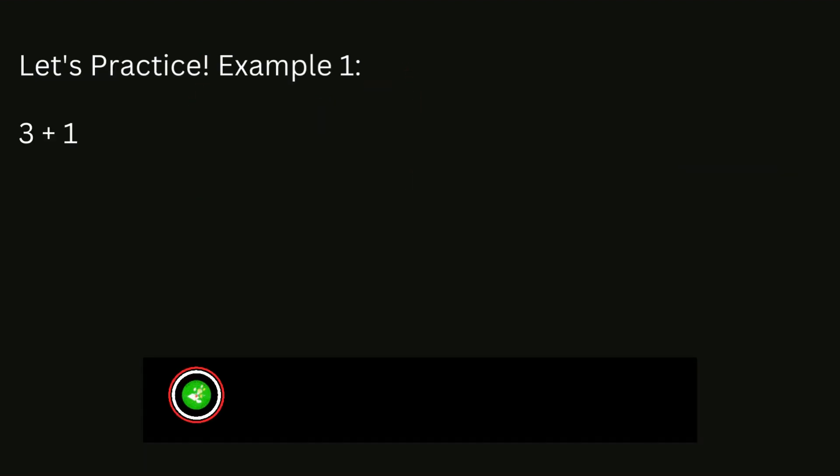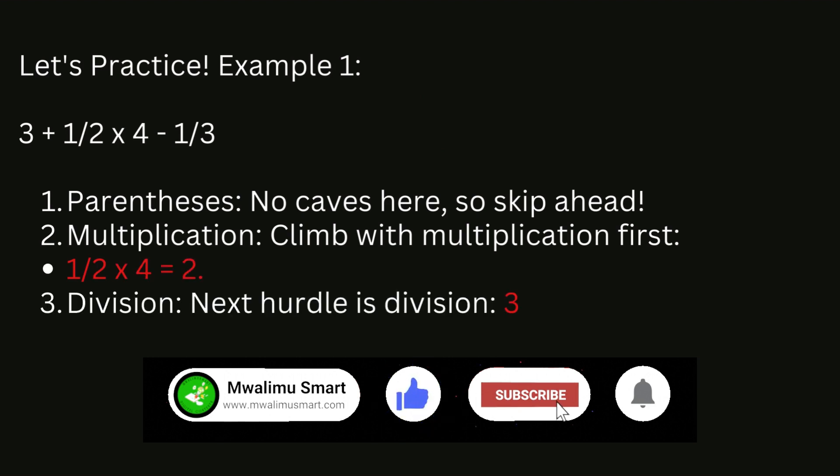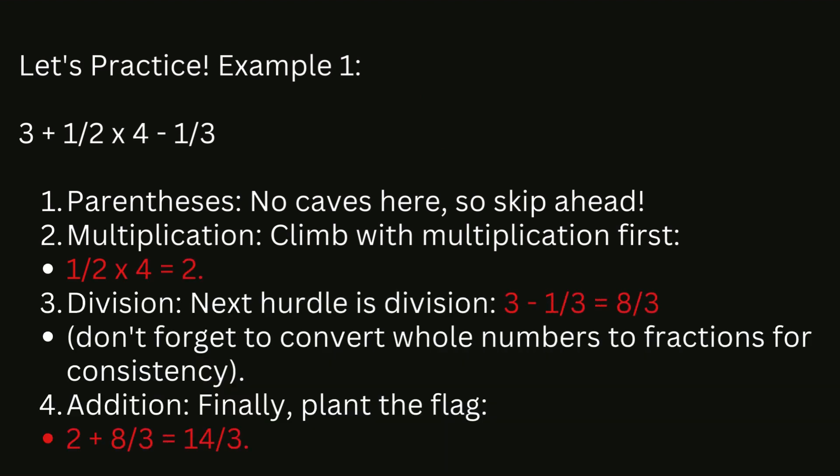Let's practice. Example 1: 3 plus 1 half x 4 minus 1 third. 1. Parentheses. No caves here, so skip ahead. 2. Multiplication. Climb with multiplication first. 1 divided by 2 times 4 equals 2. 3. Division. Next hurdle is division. 3 minus 1 divided by 3 equals 8/3. Don't forget to convert whole numbers to fractions for consistency.